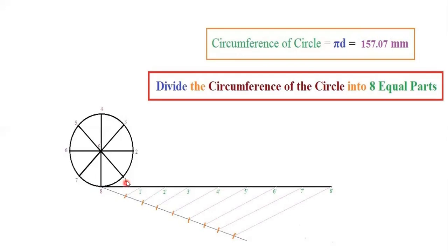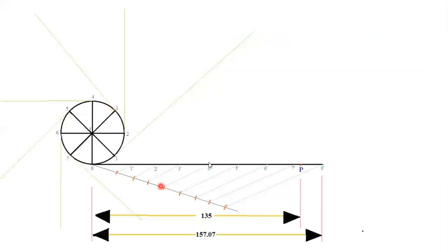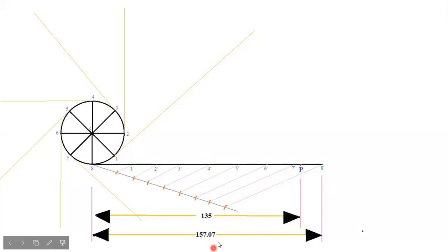The naming for the circle divisions is 1, 2, 3, 4 and so on. Since the question clearly states the string length is less, the string length is 135 mm, which is less than the circumference of 157.07 mm. So you will get a point on the circumference line called P, where the distance from 8 to P is 135 mm, and 8 to 8-dash is 157.07 mm.